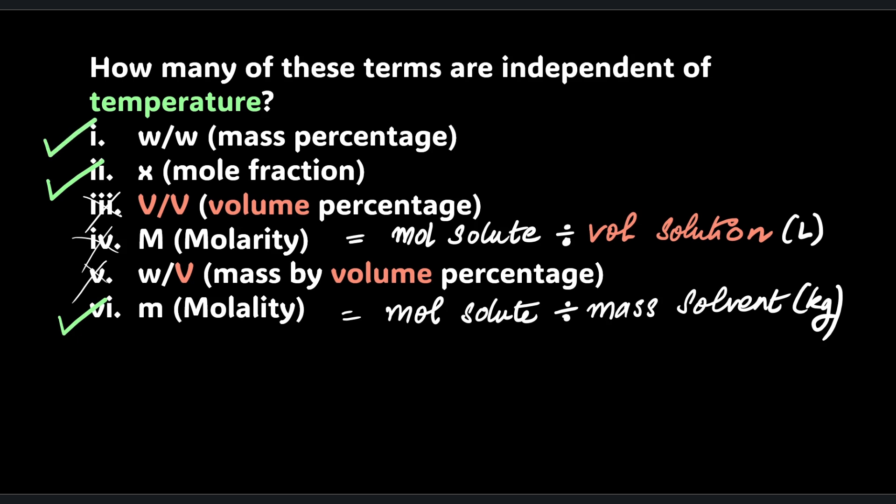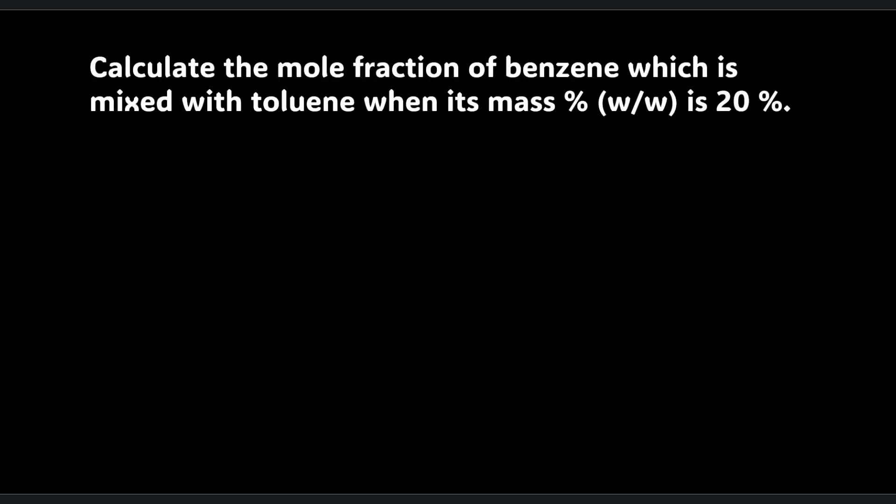On to the third and last question in this short video. This one takes a little bit of effort to start. We're going to calculate the mole fraction of benzene which is mixed with toluene when its mass percentage weight by weight is 20%. Lot to take in. This is what we need to find: mole fraction. Let's color code things as always. Mole fraction of benzene which is mixed with toluene. I'm going to go out on a limb and say that this is the solute - fair assumption - and this is the solvent. Usually solvent is the stuff in a larger quantity, and since the mass percentage is 20%, clearly there's more of toluene than benzene mass-wise at least.